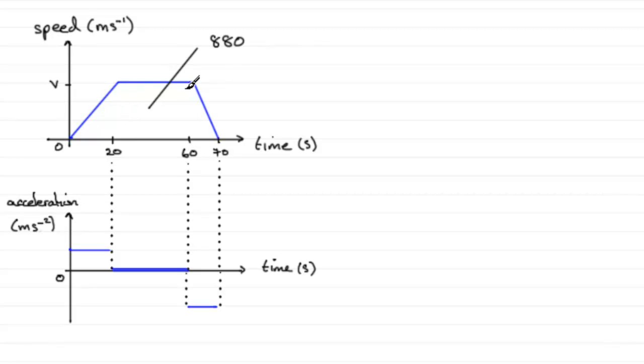So this shape here is a trapezium. All I need to do is work out the area of a trapezium and equate it to the 880. You could take the slow approach and divide this up into a triangle, a rectangle and another triangle and then add those areas together and equate it to the 880. But it is much quicker if you remember the area of a trapezium.